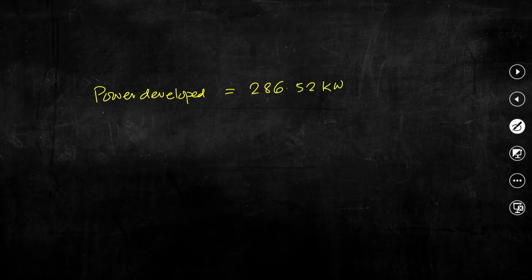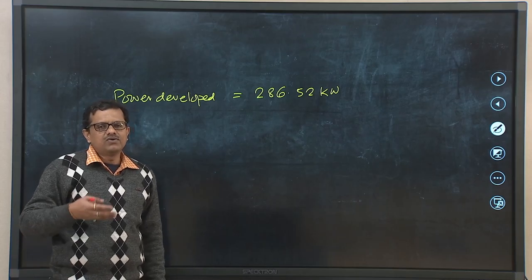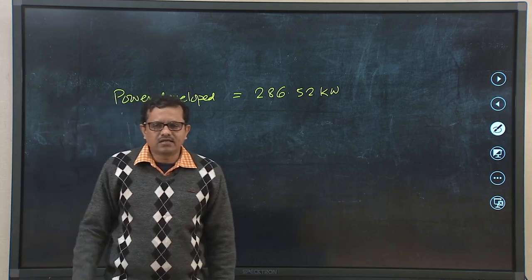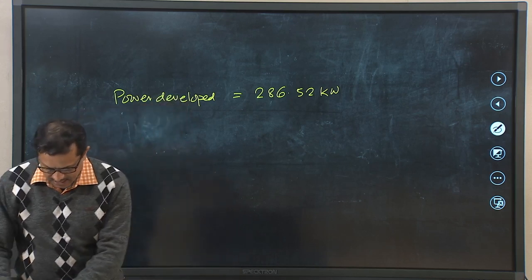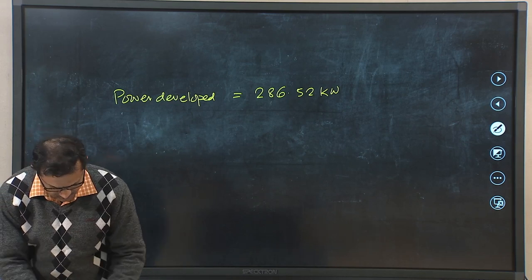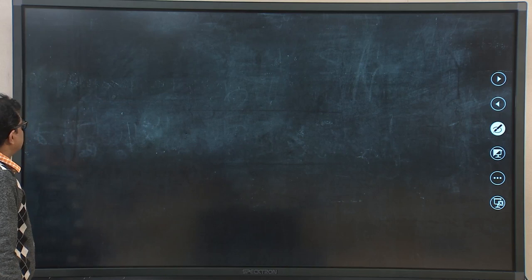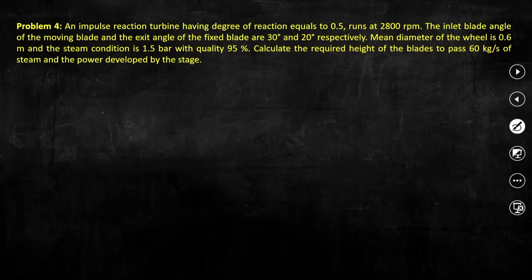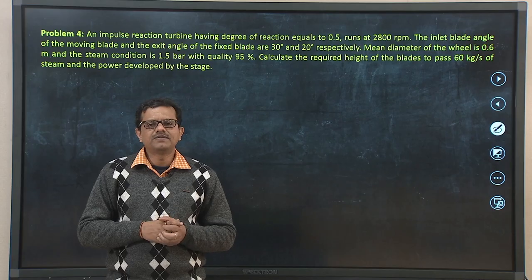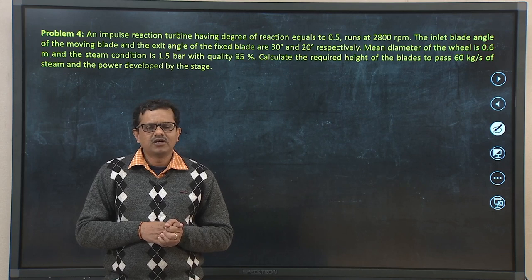We can check whether that is correct. This problem illustrates how solving numerical examples helps us recapitulate the theoretical concepts we have learned. The last problem today is from the impulse reaction turbine. We have solved two problems from the impulse turbine; this problem is from the impulse reaction turbine.